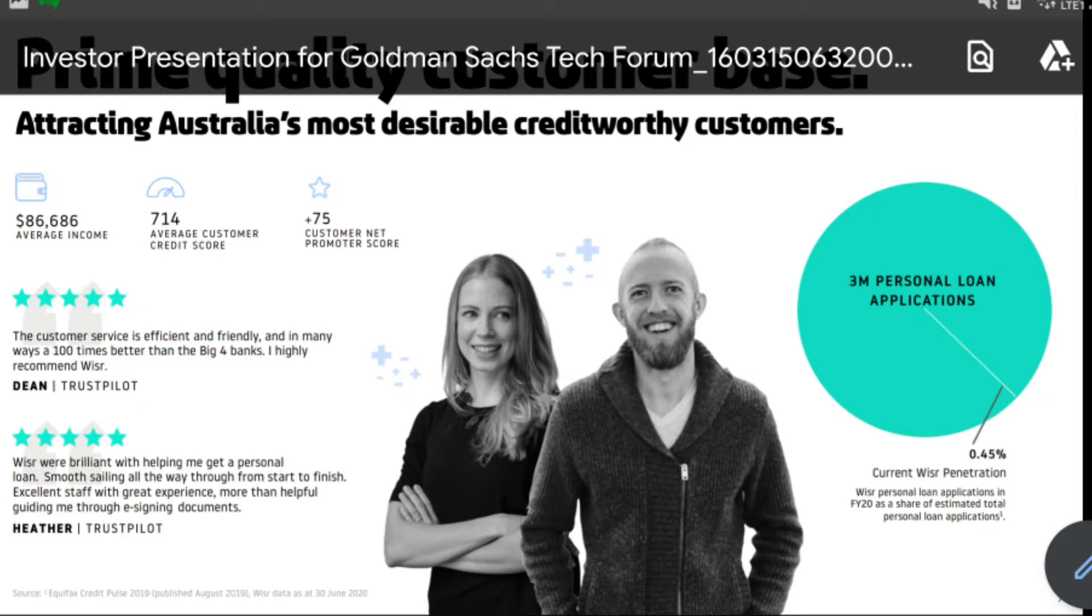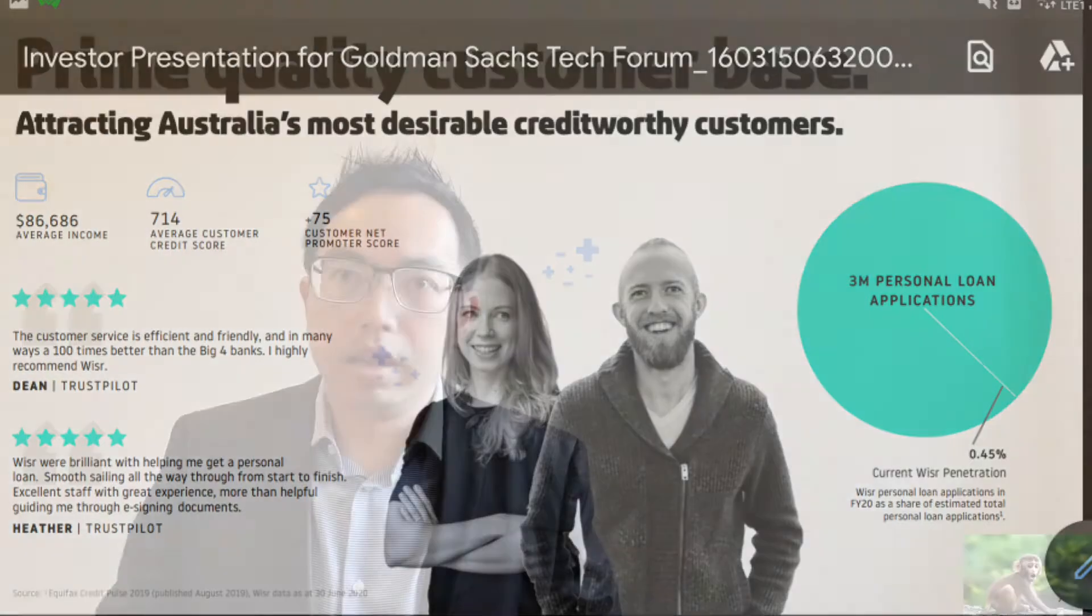The average income of Weiser's customer is $86,000 per annum and that's actually really high. They do ask for proof of income of the borrower's husband or wife to make sure the family as a whole has sufficient income to support the household expenses. This is a very good way of lowering the credit risk. A lot of the big banks and some of the non-bank lenders like Latitude only ask for proof of income of the person borrowing the money.